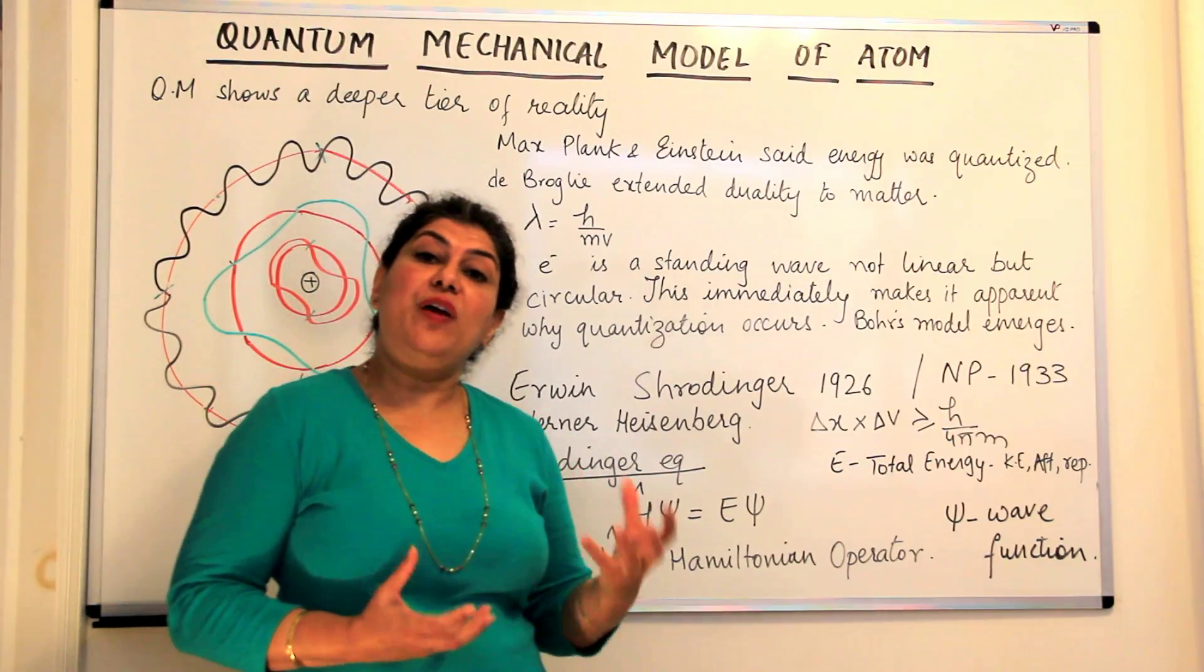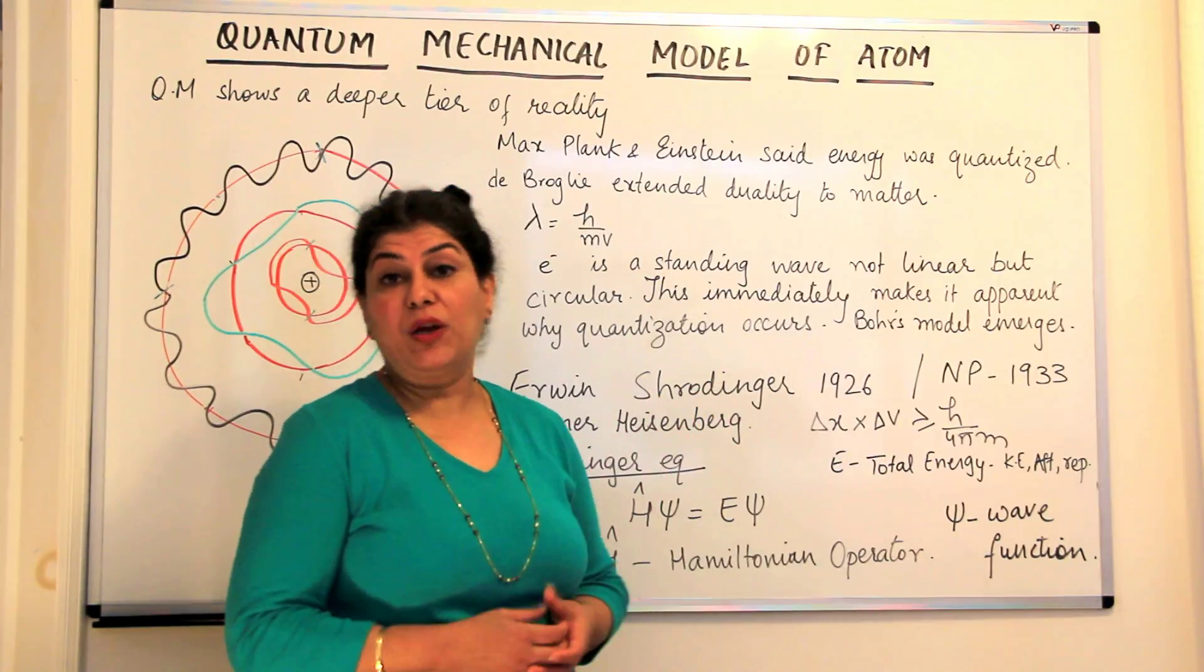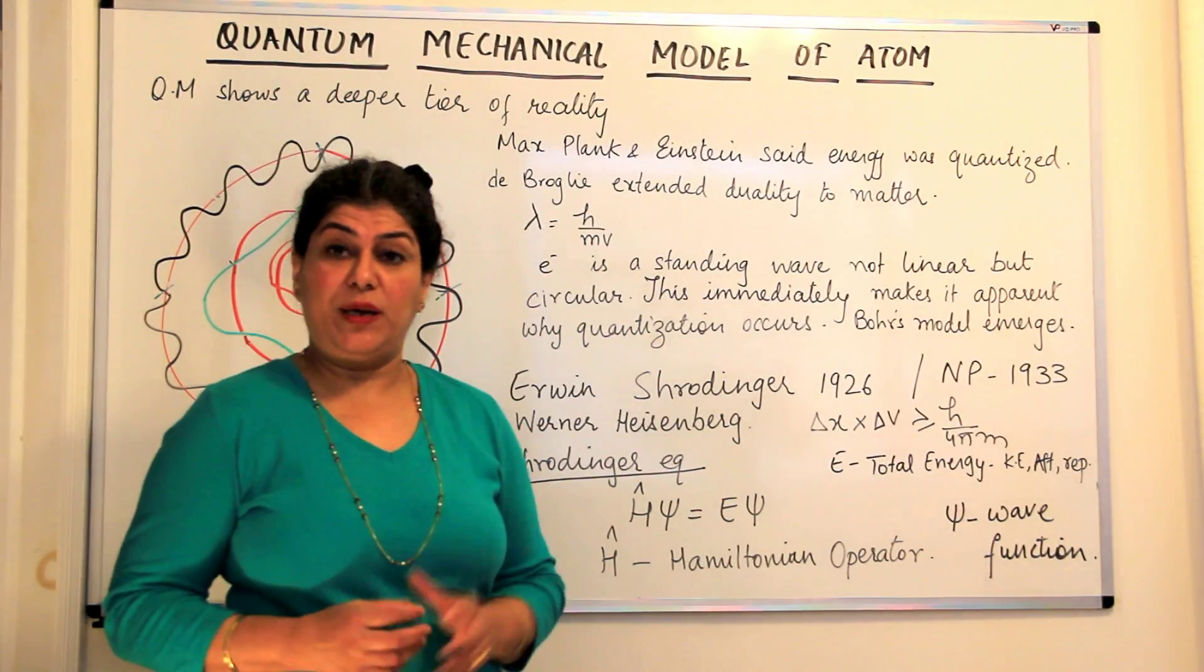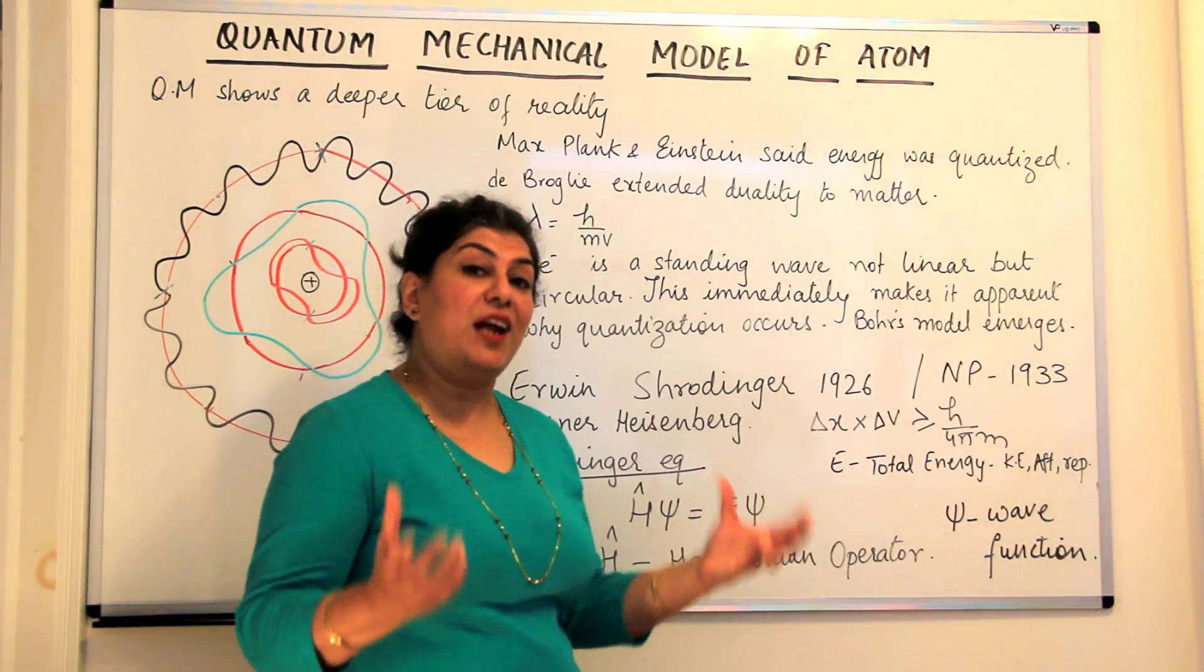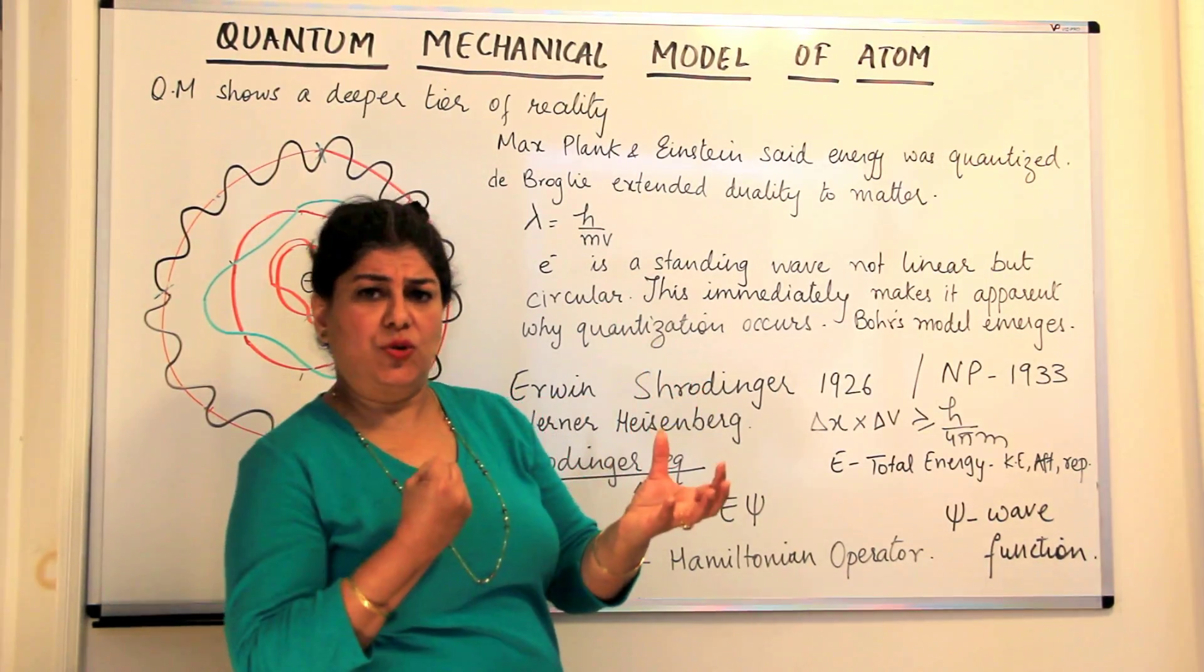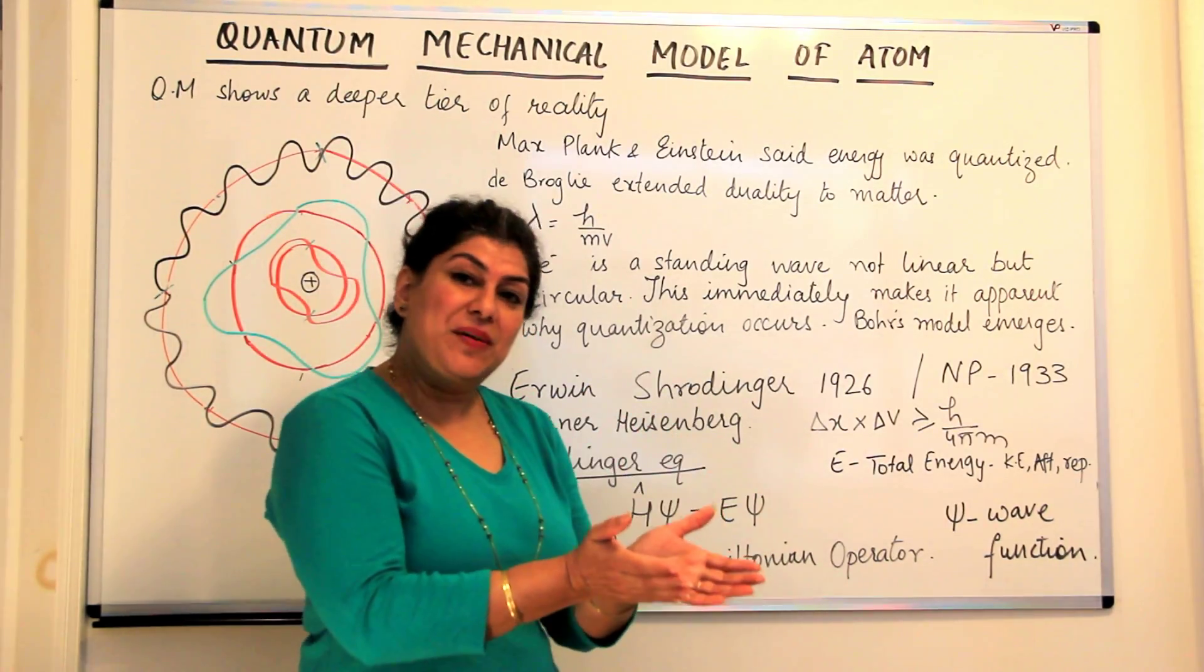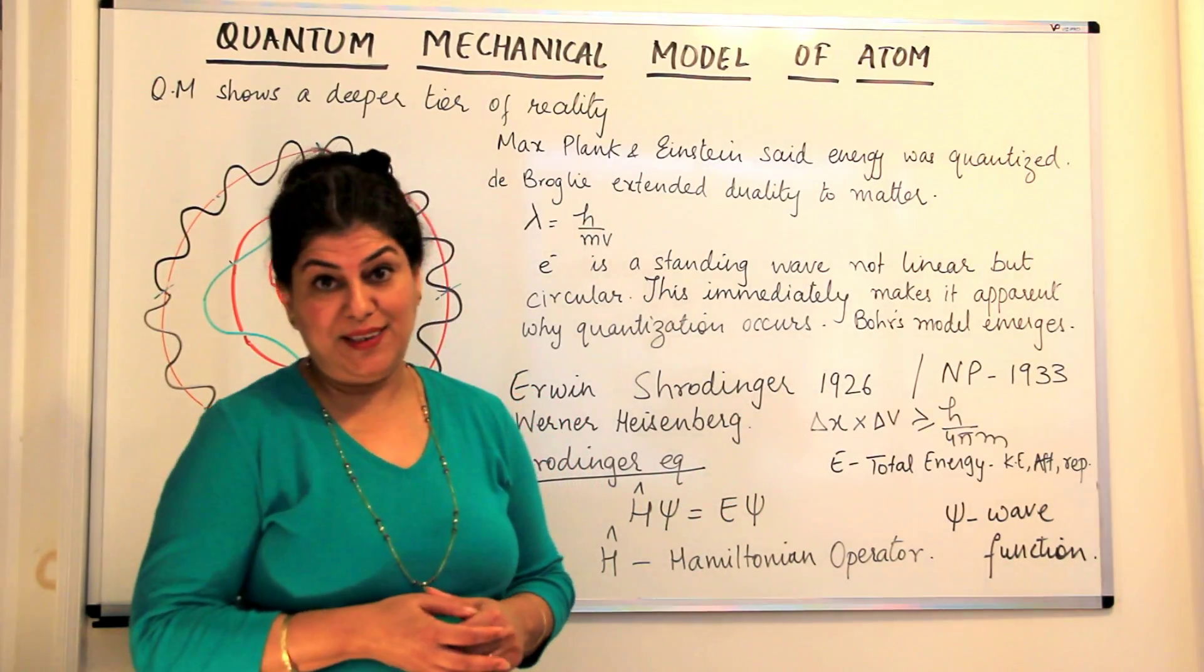But then why wasn't this wave nature visible for macroscopic objects? He gave the explanation that the mass is in the denominator and the mass for a macroscopic object is much larger in comparison to the wavelength, and therefore the wavelength is so minuscule, it is so small that it's not visible to us. Hence we can only see the particle-like nature of macroscopic objects and we can't see the wave-like nature.